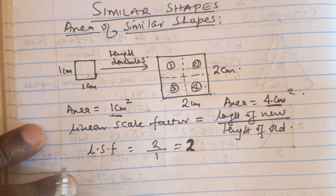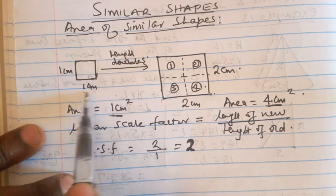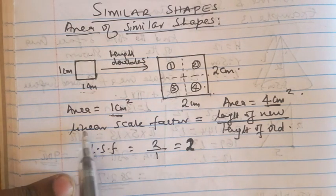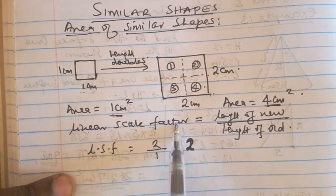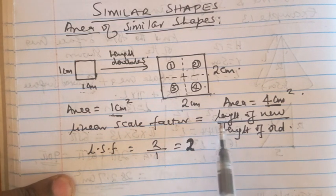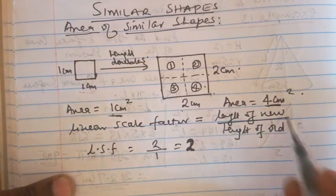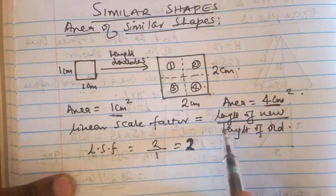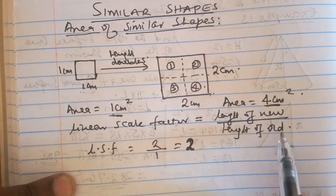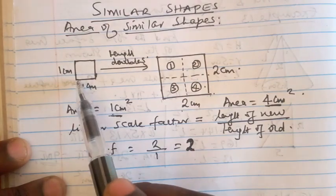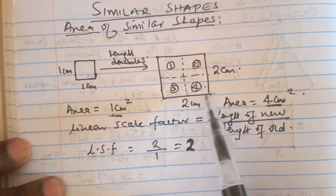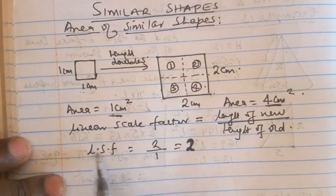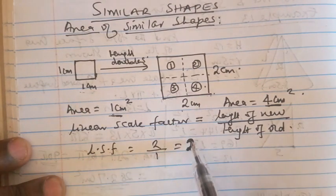Now I want to concentrate on how the length has been affected from one to two, and this gives us the word linear scale factor. The linear scale factor is given by the length of the new figure divided by the corresponding length of the old figure — corresponding meaning if we consider this length, we consider the corresponding length; if we consider the diagonal, we consider the corresponding diagonal. In this case, our linear scale factor is two divided by one, which is two.